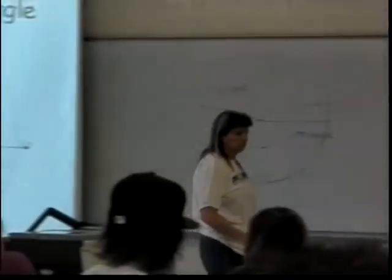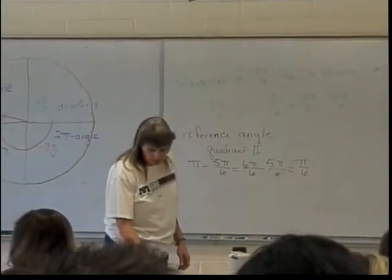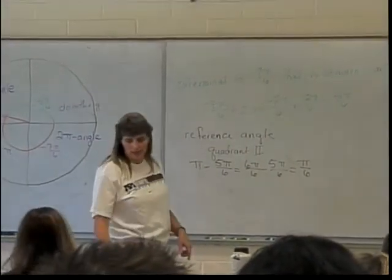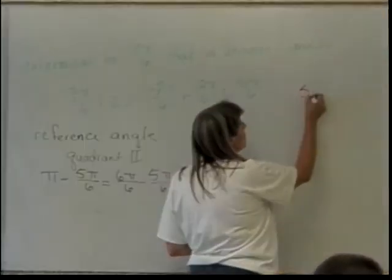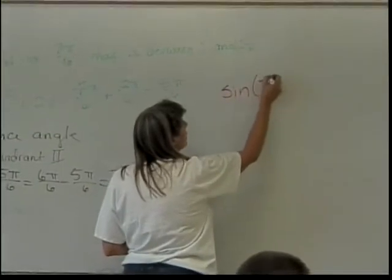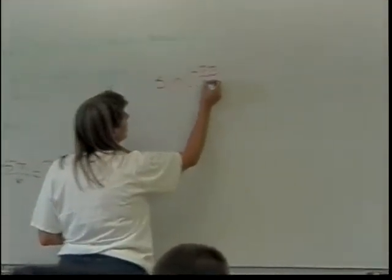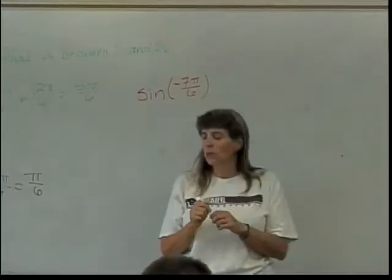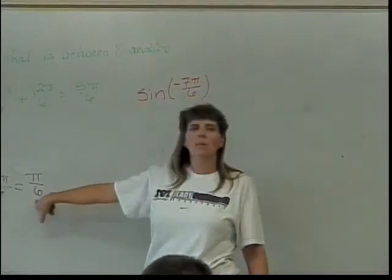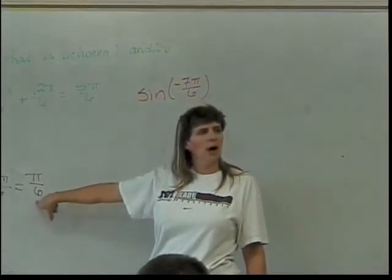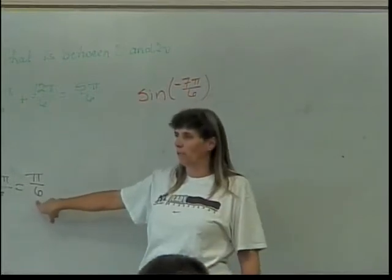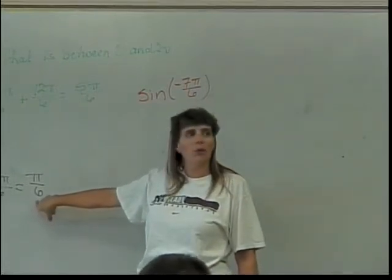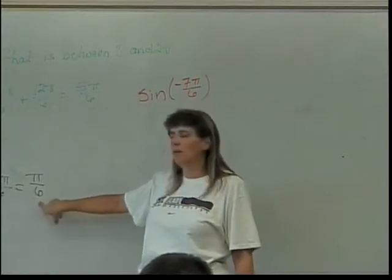So now, knowing the reference angle, I can answer the following questions. What is the sine of negative 7 pi over 6? Well, here's what it's going to be. It's going to be the same as the sine of pi over 6, but the sign could be different, depending on the quadrant. What's the sine of pi over 6?